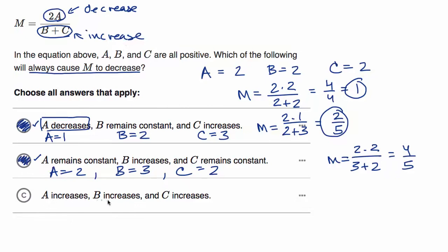So choice C, A increases, B increases, and C increases. We could try that out. Let's say they all go from two to three. So A equals three, B equals three, and C equals three. So in that situation, two times A, you get two times three over three plus three. This is gonna be six over six. Notice, in this particular situation, M is unchanged.